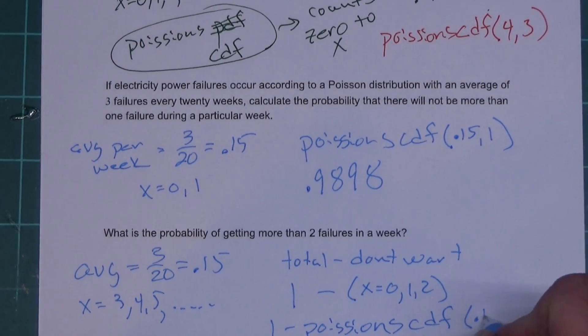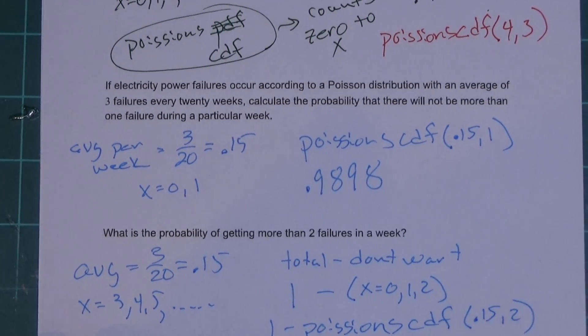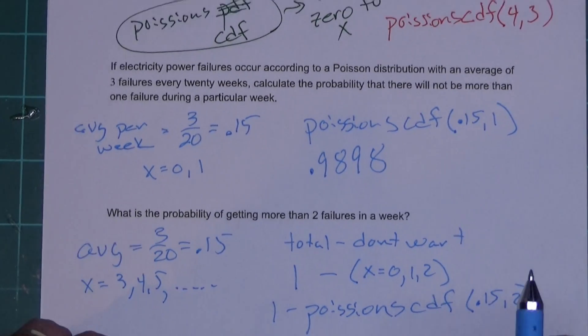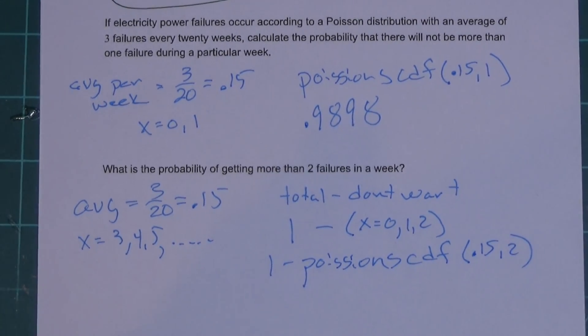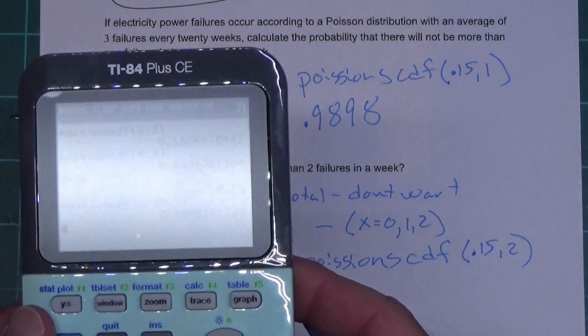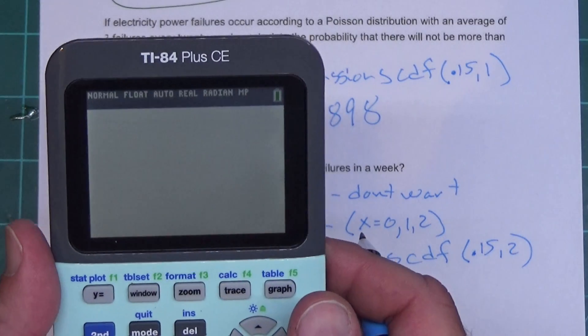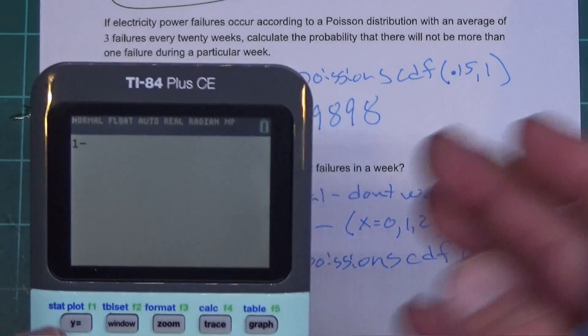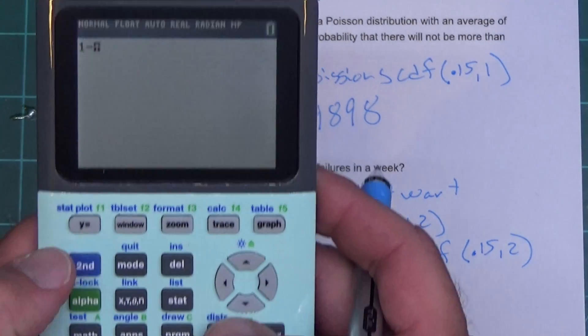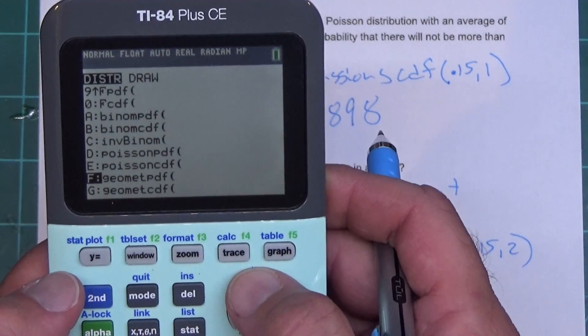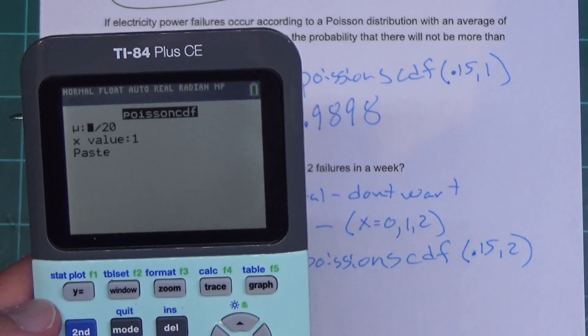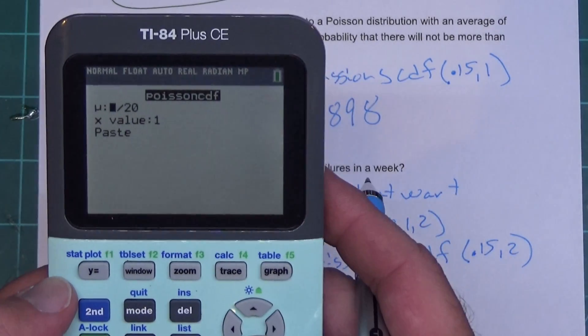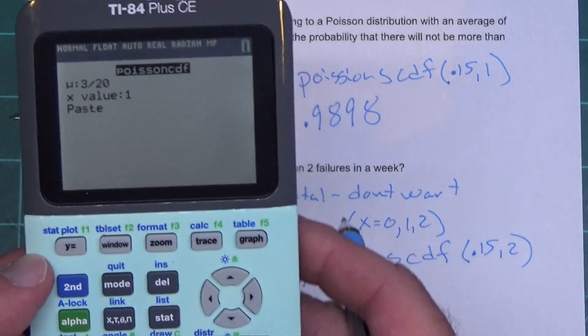We're gonna have to type it in like that. So let me get this calculator here. Let's clear the screen. Now since I'm doing a one minus, I have to type one minus, then hit my second distribution, hit the arrow up to Poisson's CDF.